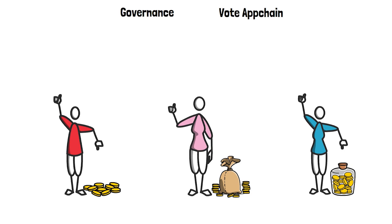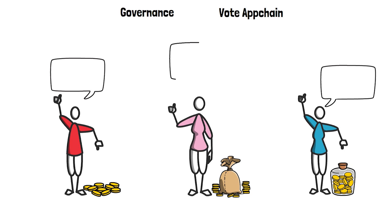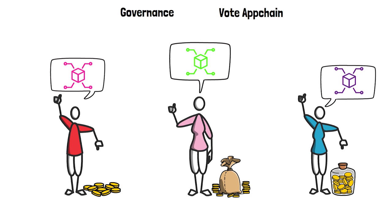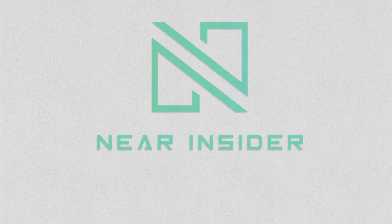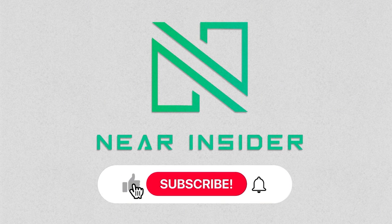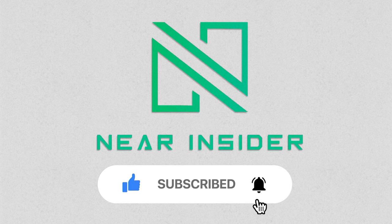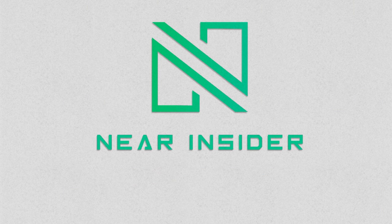Third, vote on app chains: OCT holders have the right to choose the best app chain projects by upvoting or downvoting those projects when they are in the candidate queue wishing to join the network. As a result, OCT holders not only have the opportunity to diversify their portfolio with diverse assets from app chains by staking multiple app chains — they also decide which app chains are allowed to join the network. That concludes our thorough analysis of Octopus Network and its app chains built on NEAR. If you want us to research further on any specific projects, leave a like and comment below. Thank you and goodbye.